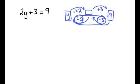The key here is to recognize that we are basically doing order of operations in reverse. So if we were evaluating the expression, we would take y, multiply it by two, and then add three. But because we're solving, we're going to work backwards: we will subtract three, which is the inverse of adding three, and then we will divide by two, which is the inverse of multiplying by two.